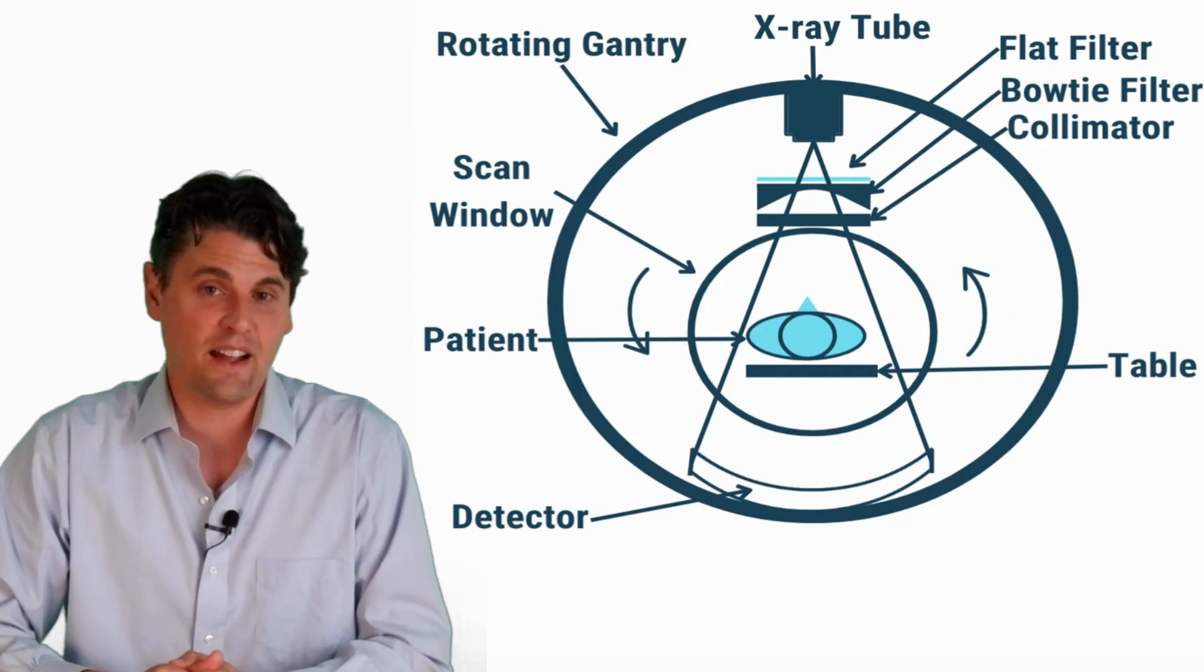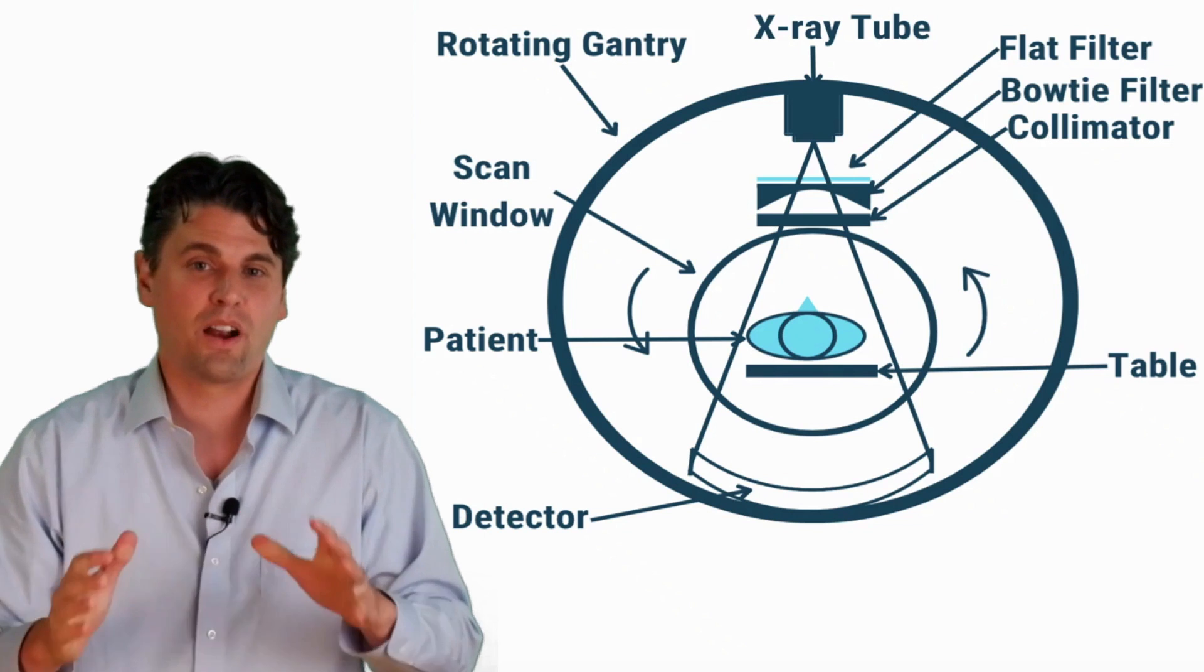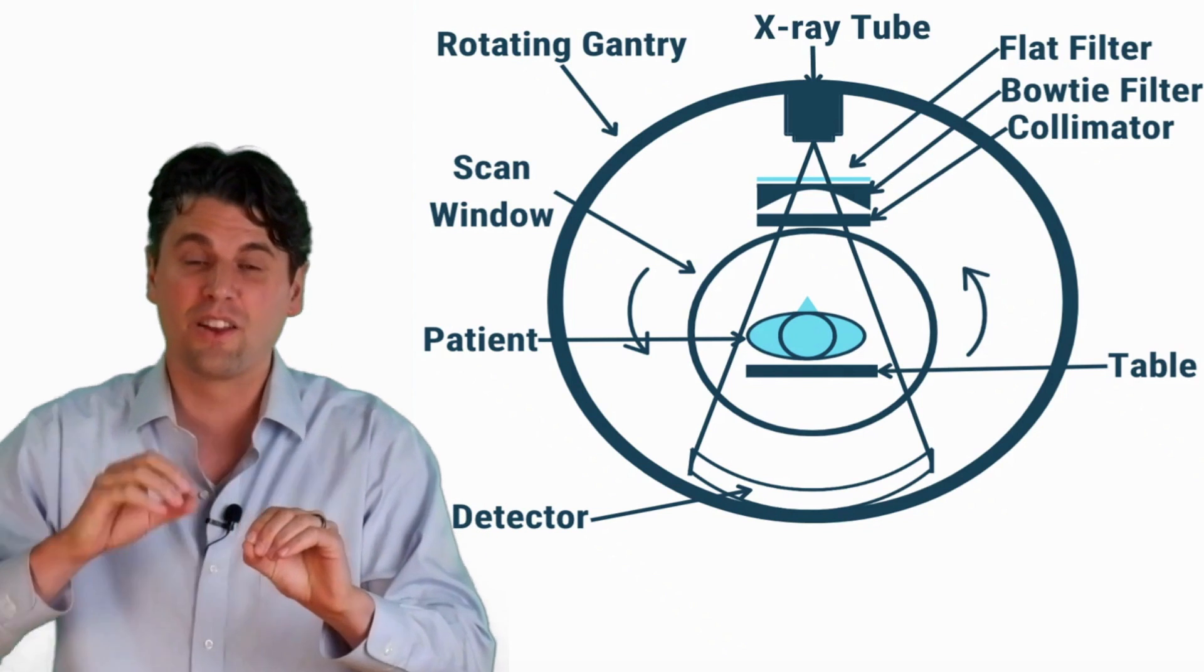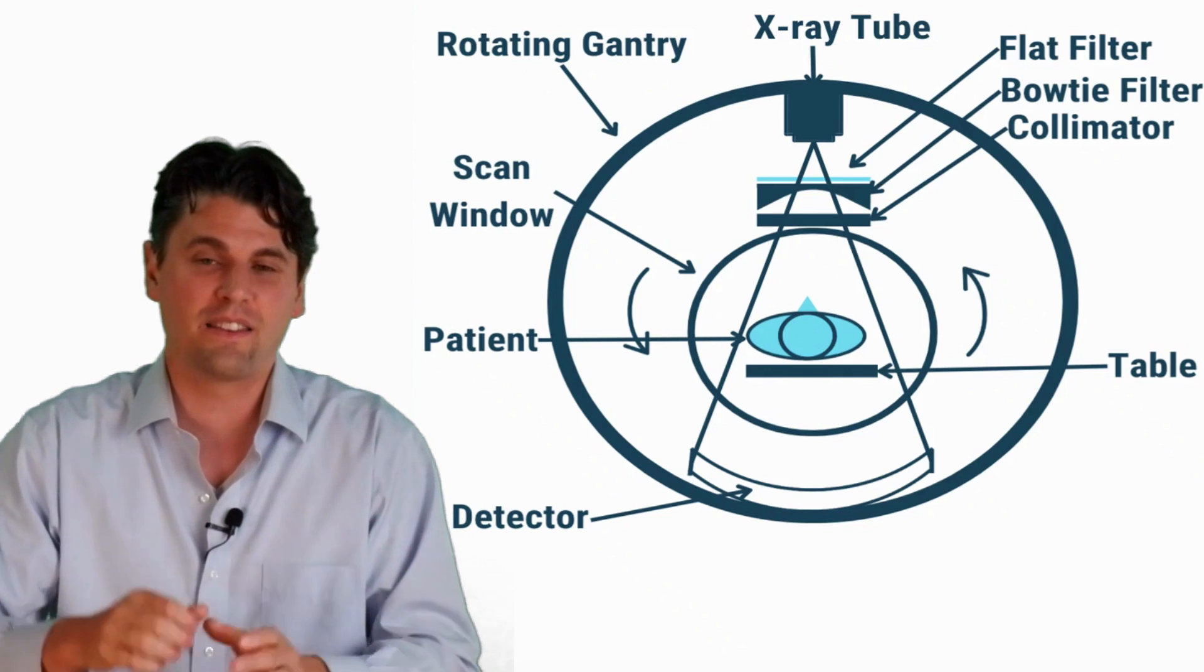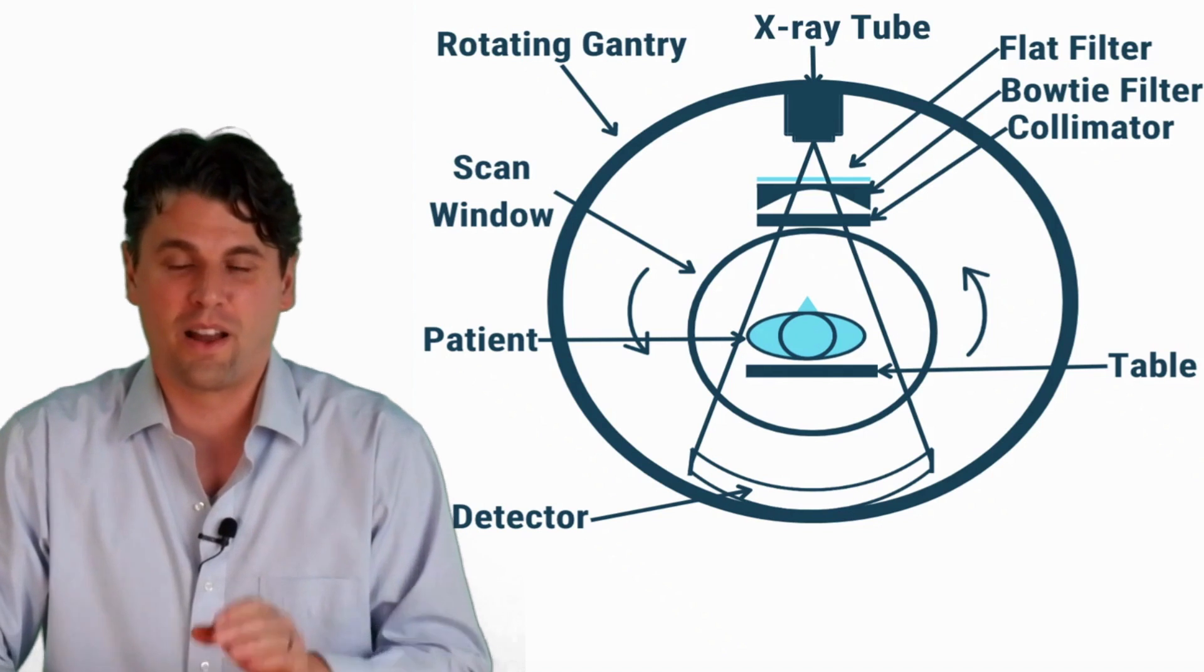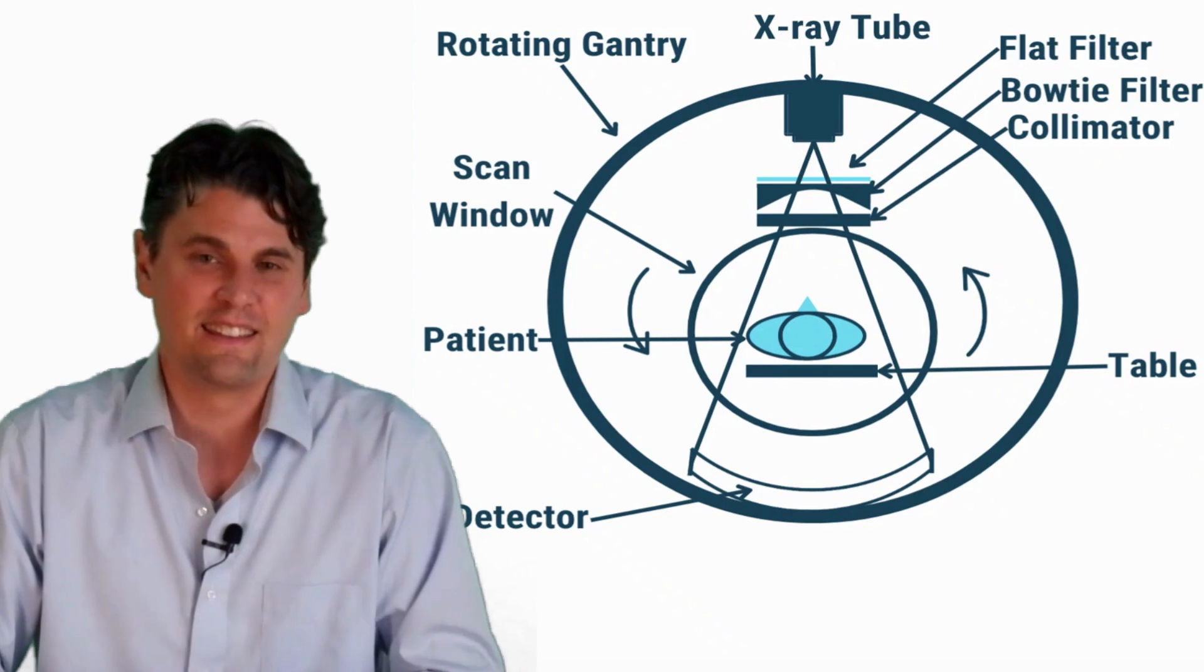The x-rays are incident on the detector array. See our video about CT detectors where you'll learn how the x-rays come in. They're converted from x-rays to visible light photons and then those visible light photons are measured and converted to an electrical current which is then digitized at the CT detector.